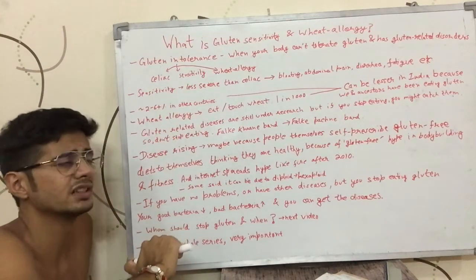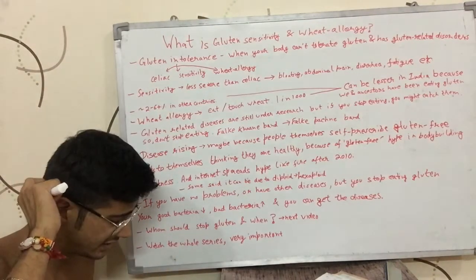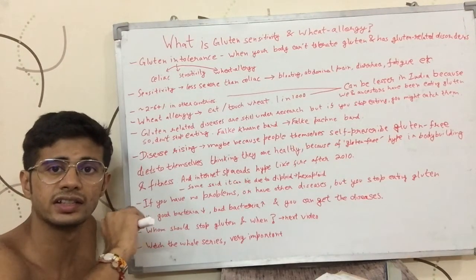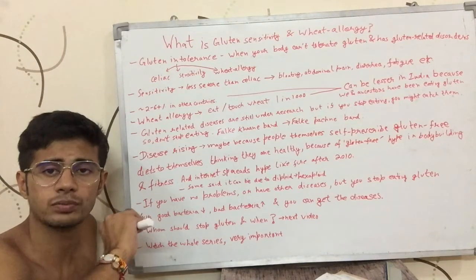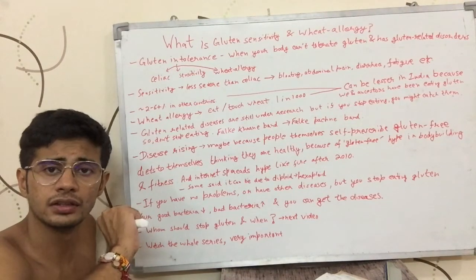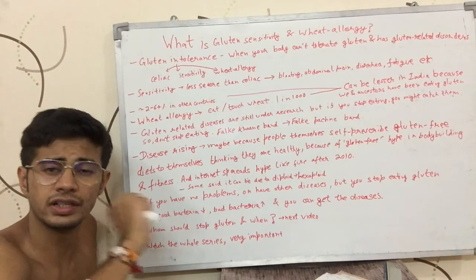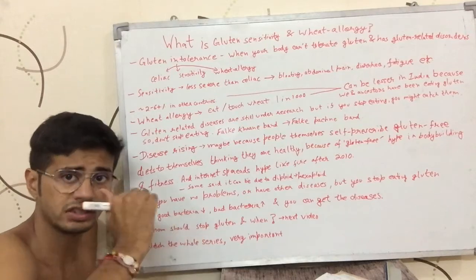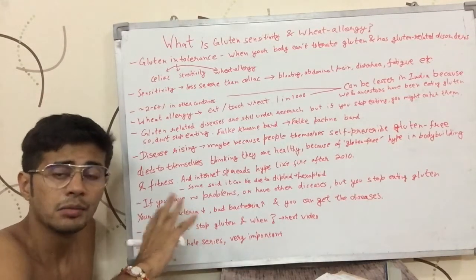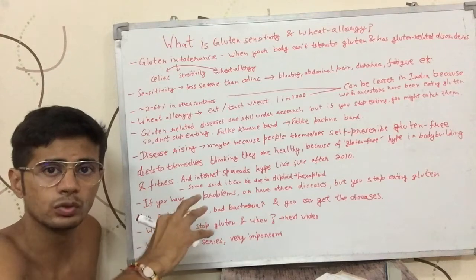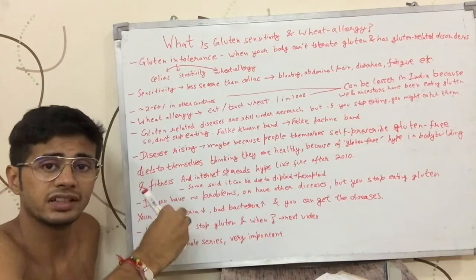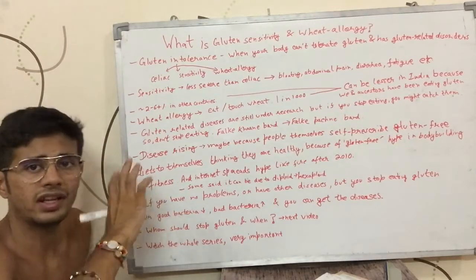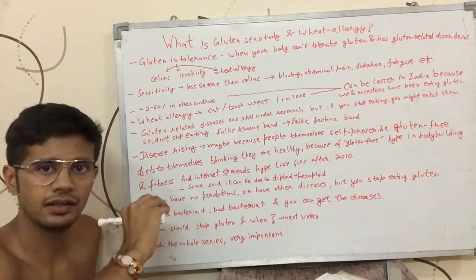Now comes gluten sensitivity. In celiac disease, the person faces really harsh problems even if they eat a really small amount of gluten. In gluten sensitivity, the person does not have such a severe disease as celiac, but still, if you give gluten to that person, their body is going to face problems — not as severe as celiac, but still facing problems with gluten. That is what gluten sensitivity can be thought of.